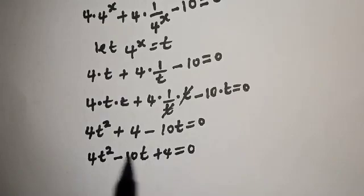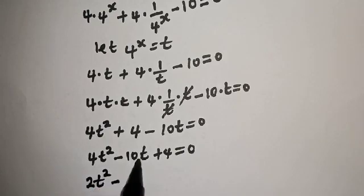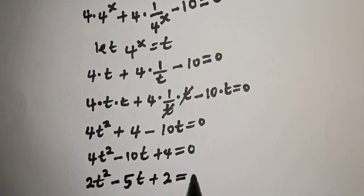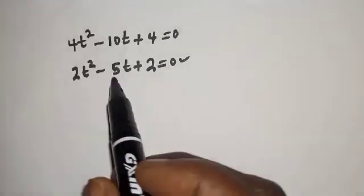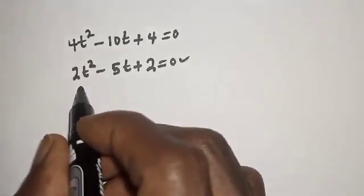We can reduce this equation. Dividing through by 2, we have 2t squared minus 5t plus 2 is equal to 0. This is a quadratic equation which can be solved using either the factorization method or the quadratic general formula. In this case, we are going to consider the factorization method.